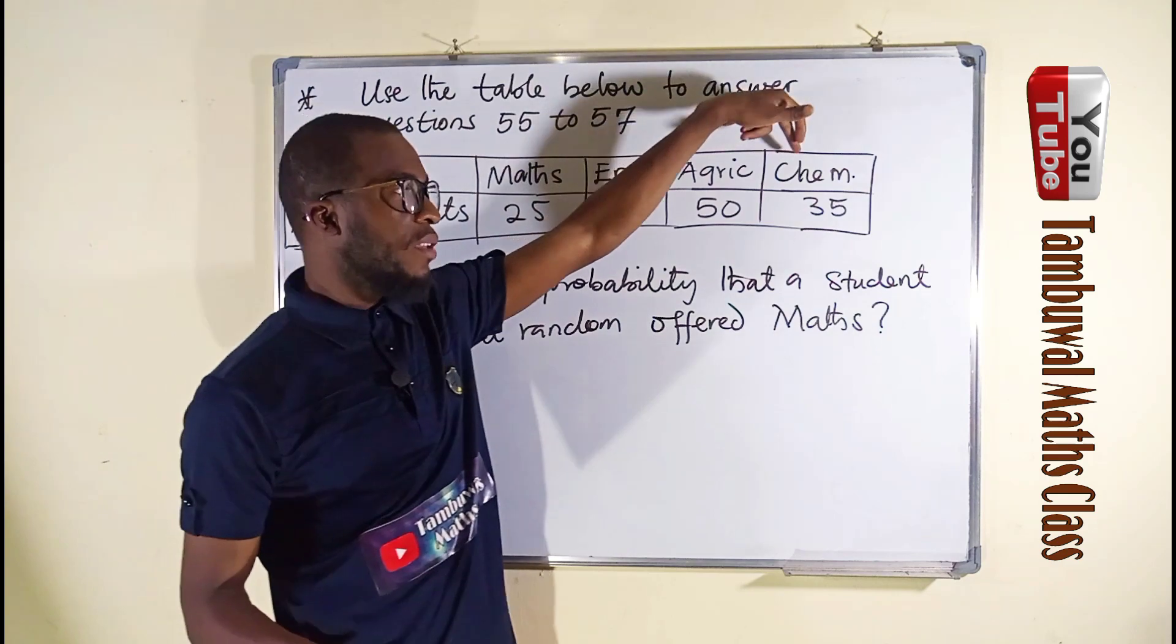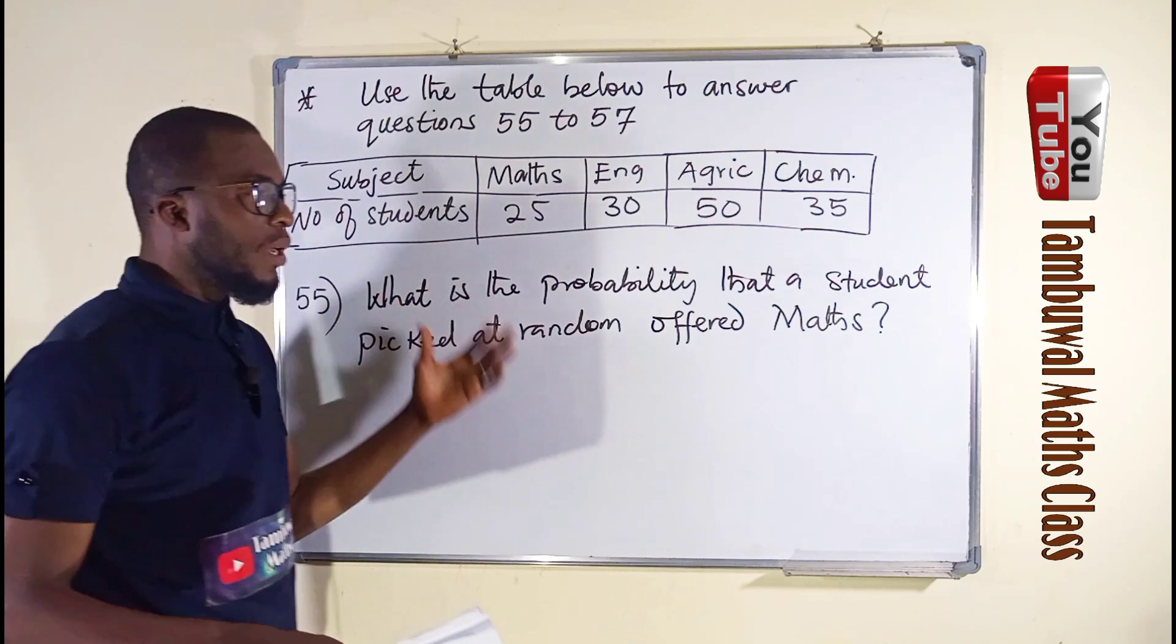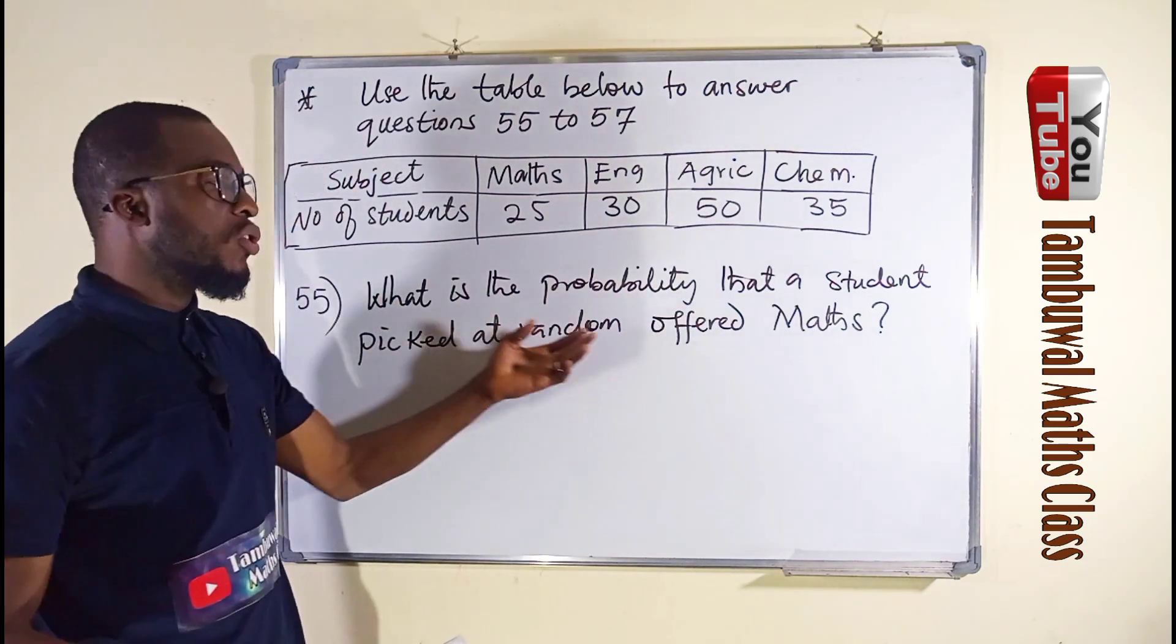These are four subjects: math, English, agricultural science, and chemistry. Question 55 asks: What is the probability that a student picked at random offered mathematics?